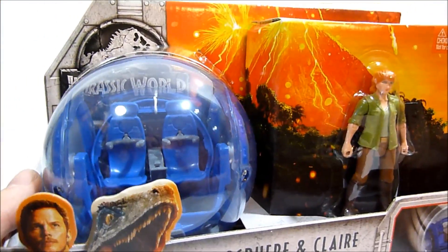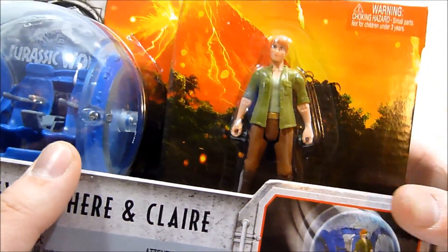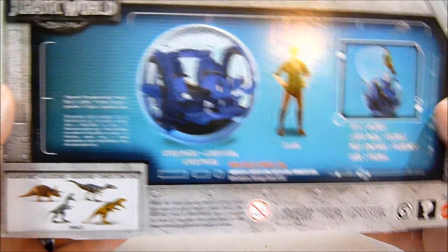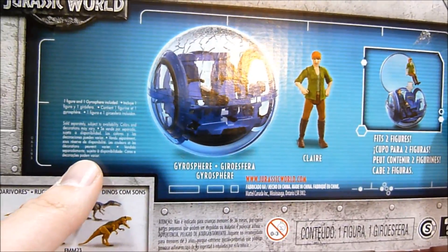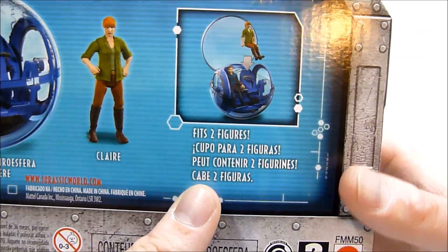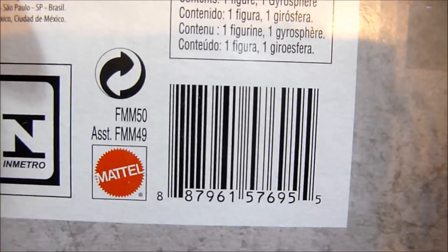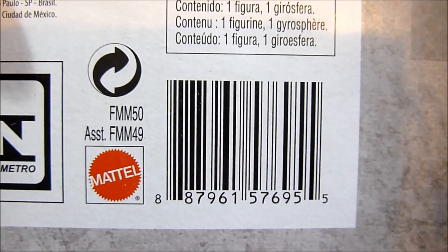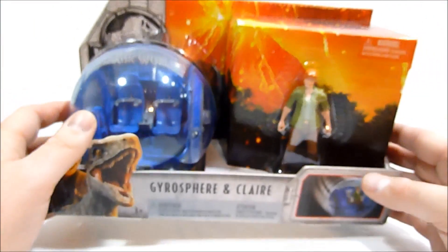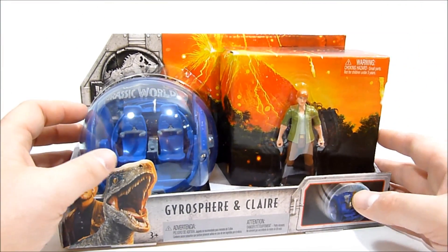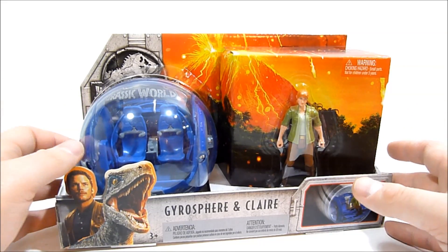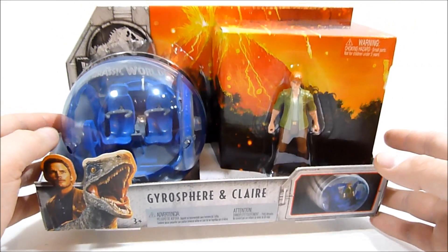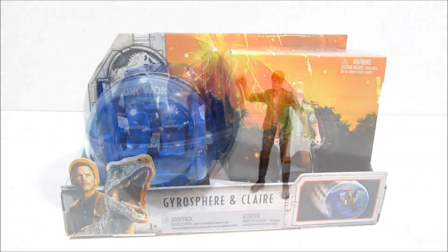You can fit two characters inside the gyrosphere, which is good because I now have two characters to put in there. And then on the back, you can just see it shows you the gyrosphere again and Claire again and fits two figures. So that's exciting. And then I'll go ahead and show you guys the barcode in case you want to copy down that UPC and see if your local stores have these in stock yet. So looks like it's going to be a nice little set to mess around with. So without further ado, I'm going to go ahead and get this out of the package and put together and we're going to check it out right now.